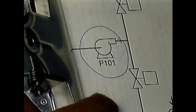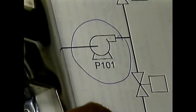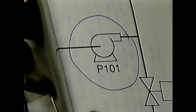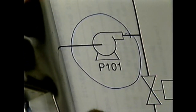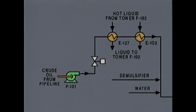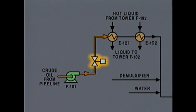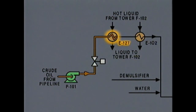Once you locate pump P-101, it's a good idea to circle it on the diagram. Circling components on the diagram as you locate them will help you avoid overlooking components in the system. The next component we come to on the diagram is a pneumatic piston-operated control valve. This valve controls the flow of oil to the tube side inlet of heat exchanger E-127. One way to make sure you have the right valve is to first find the right heat exchanger, which is probably easier to find and is immediately downstream of the valve.